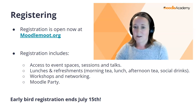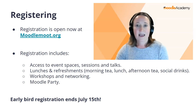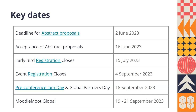Early bird registration ends on July the 15th. We also have some other key dates available on our website. You will have until the 4th of September to register for the MoodleMoot Global event. The event itself starts with the pre-conference on Monday the 18th of September, with the Dev Jam occurring all day and other jams running in the afternoon. Then the conference itself runs from Tuesday the 19th of September until Thursday the 21st of September.